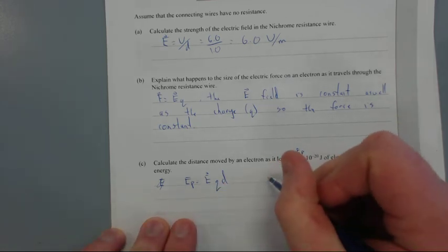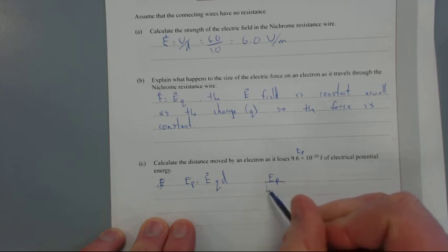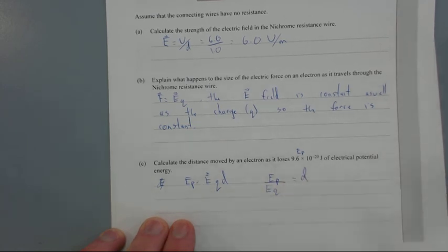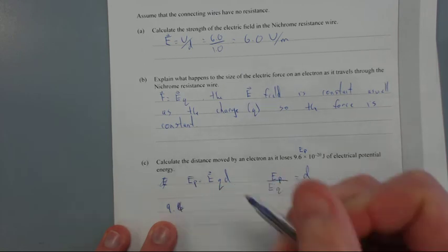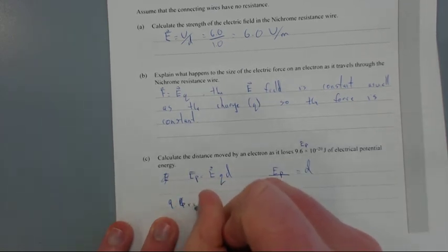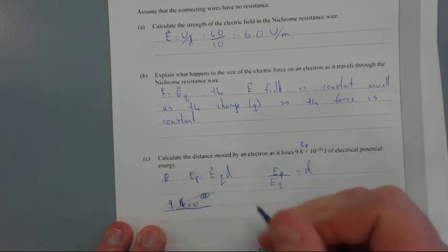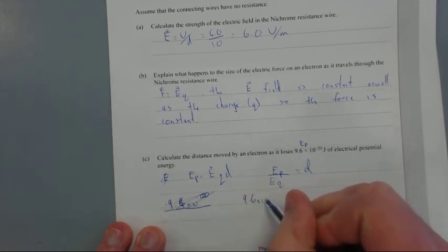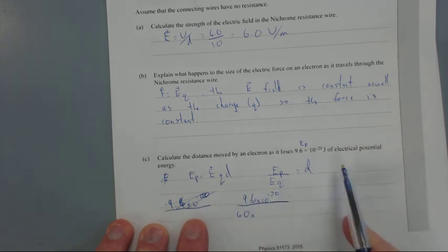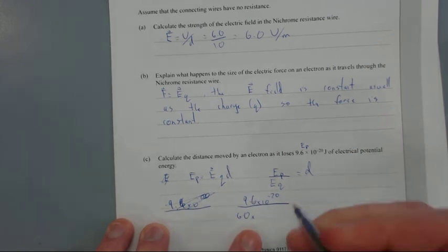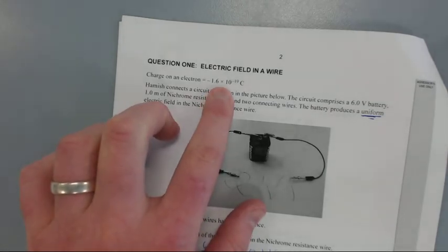We're going to have Ep divided by E times Q equals d. All we need to do is substitute in some numbers. The electric potential is 9.6 times 10 to the negative 20 divided by electric field which is 6.0 times 1.6 times 10 to the negative 19.